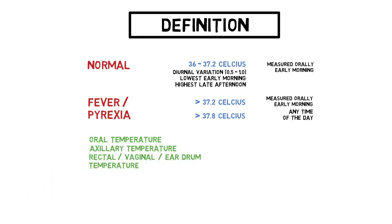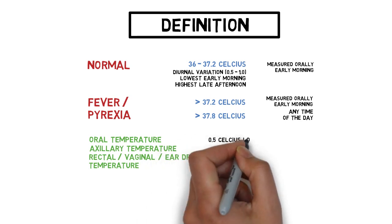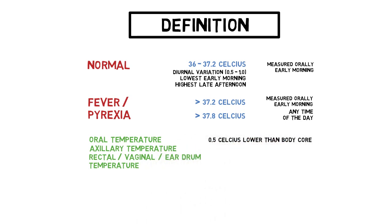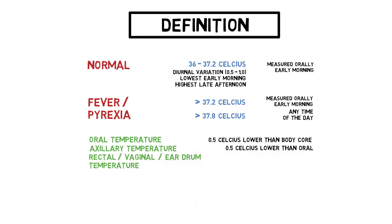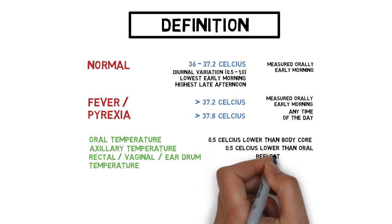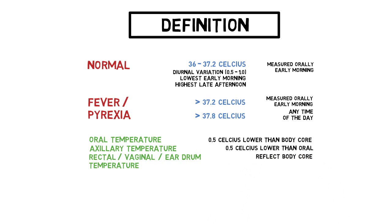You can measure temperature orally or through other ways such as axillary, rectal, vaginal or tympanic. But there are differences. For example, oral measurement is 0.5 degrees Celsius lower than the body core temperature. Axillary is 0.5 degrees less than oral, or 1 degree less than the body core temperature, while rectal, vaginal and tympanic reflect the actual body core temperature.